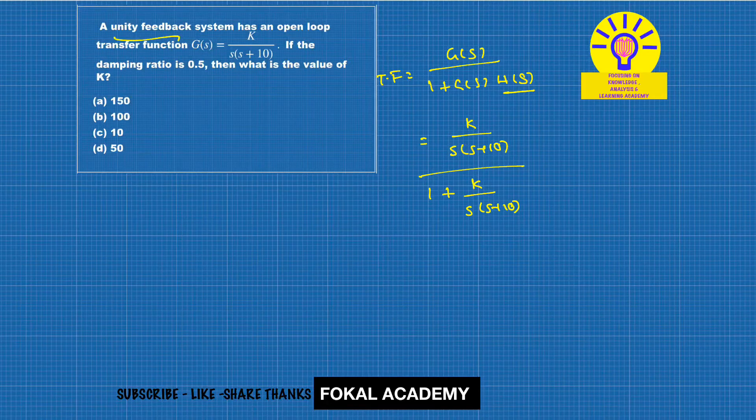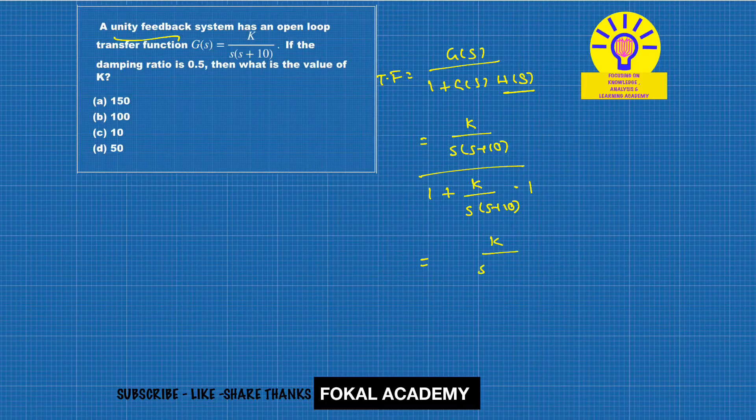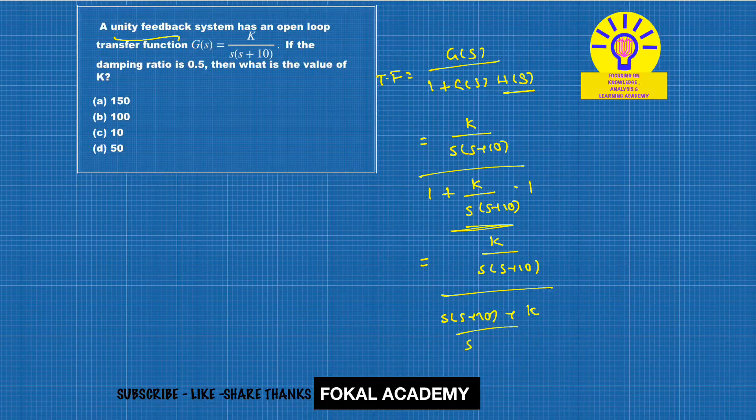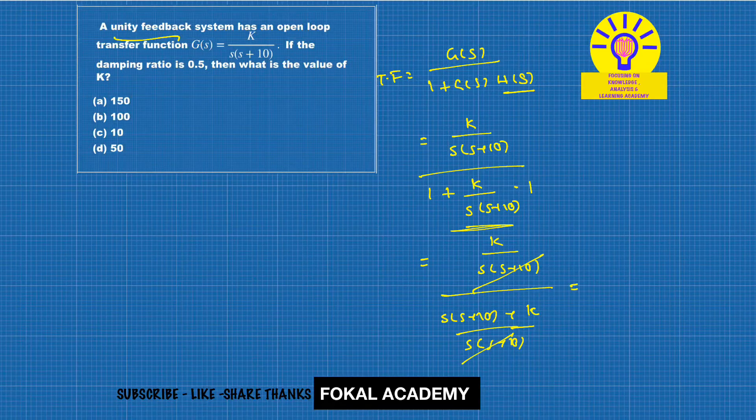So that equals k/(s(s+10)) divided by (s(s+10)+k)/(s(s+10)). Taking the LCM here, then we get s(s+10) will cancel each other, so it becomes k/(s²+10s+k).